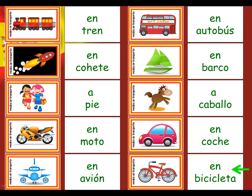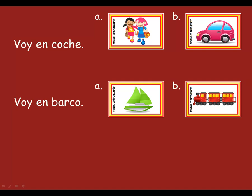So, there are our 10 transports that we're now going to be using and putting into our sentences. To help us practise them a little bit more, have a look at the sentences on the screen. All you need to do is point to the correct one. So, voy en coche — would that be picture A or picture B? Point to the one you think it is. Voy en coche — yes, it's that one.